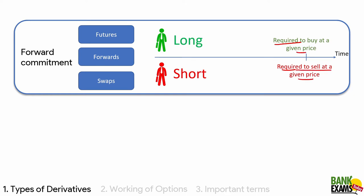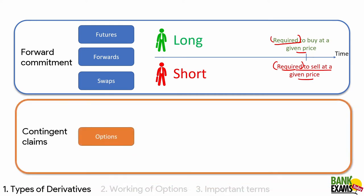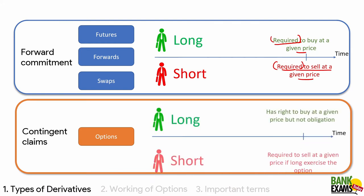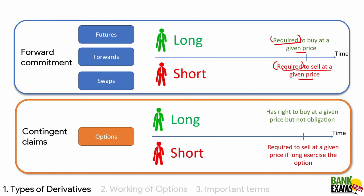Please remember the word 'required.' Under forward commitment contracts — like futures, forwards, and swaps — there is a requirement: the long and short are required at a specific point in time. While in contingent claims such as options, the long is not required. The short is required, but the long is not required.